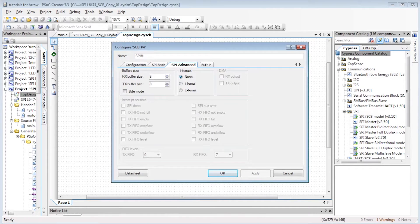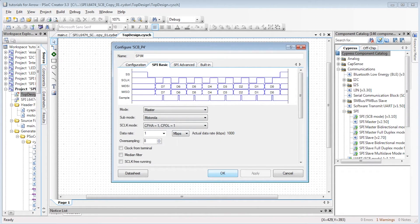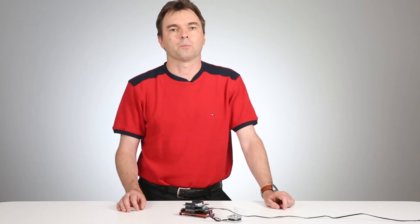MSB must be first. After each byte transmission, the chip select must be raised high, that is the case. Let's build the project to have access to the APIs, like for the I2C example.